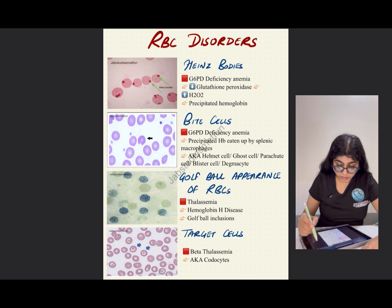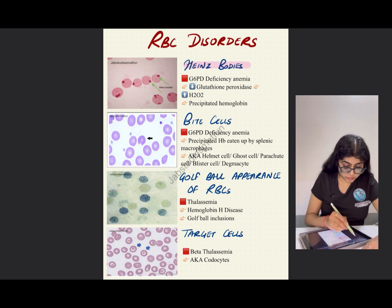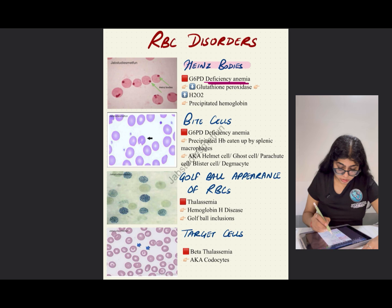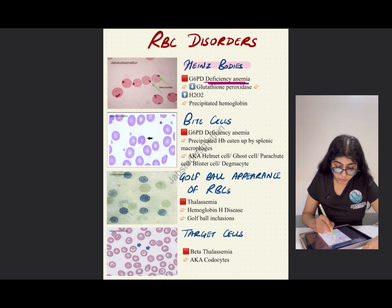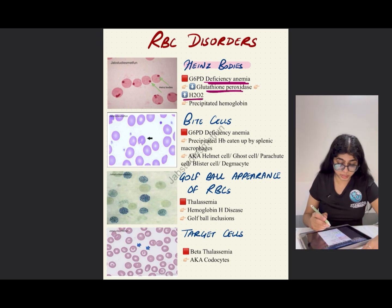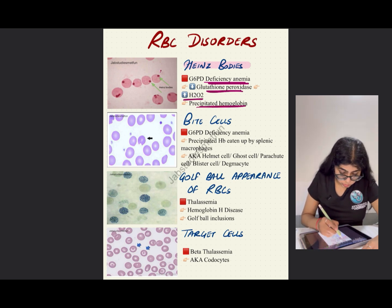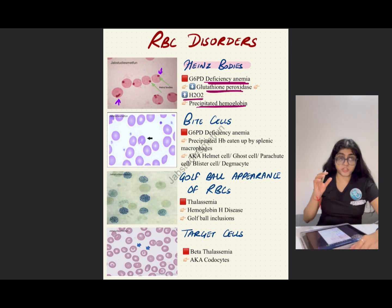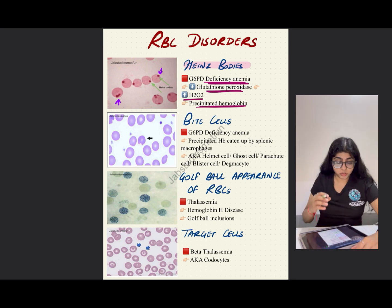In RBC disorders, the first thing we are going to see is Heinz bodies — a very famous topic for the exam, frequently asked. Heinz bodies are seen in G6PD deficiency anemia. Due to the deficiency of G6PD, there will be a deficiency of glutathione peroxidase, which leads to increased H2O2 (hydrogen peroxide) in the cells, which precipitates the hemoglobin. These Heinz bodies appear as small dot-like structures where the hemoglobin is concentrated in the cell.